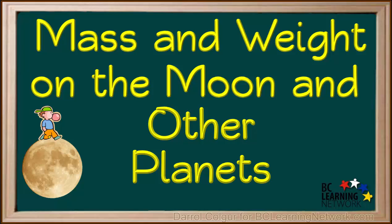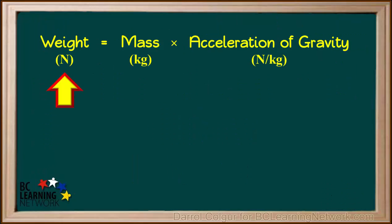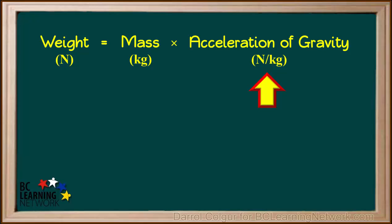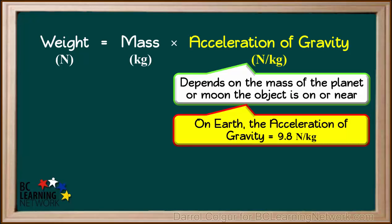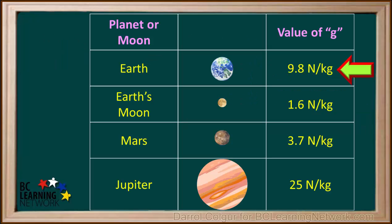Because our moon and other planets are different masses than Earth, gravity on these bodies is different than that on Earth. Remember, the equation relating weight, mass, and acceleration of gravity is: weight in newtons equals mass in kilograms times acceleration of gravity in newtons per kilogram. The acceleration of gravity depends on the mass of the planet or moon an object is on or near. On Earth, the acceleration of gravity is equal to 9.8 newtons per kilogram.